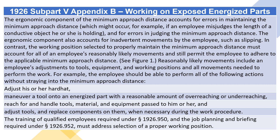Working positions selected to properly maintain the minimum approach distance must account for all of an employee's reasonably likely movements and still permit the employee to adhere to the applicable minimum approach distance. Reasonably likely movements include adjustments to tools, equipment, and working positions, and all movements needed to perform the work — for example, adjusting a hard hat, maneuvering a tool onto an energized part with reasonable overreaching or underreaching, reaching for and handling tools, material, and equipment passed to the worker, and adjusting tools and replacing components when necessary. The training of qualified employees under Section 1926.950 and the job planning and briefing under Section 1926.952 must address selection of a proper working position.